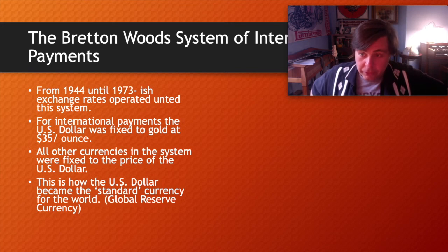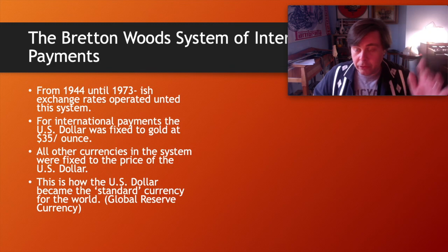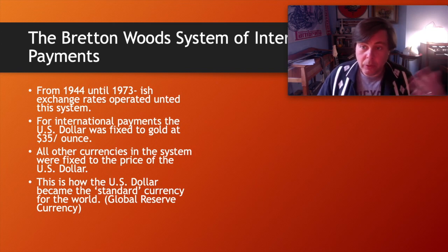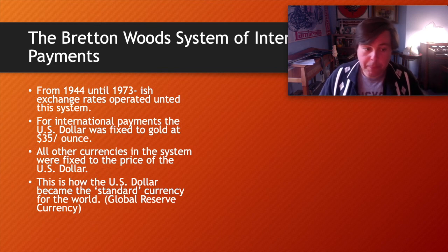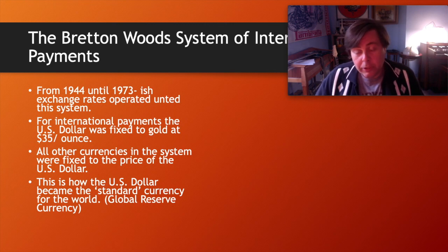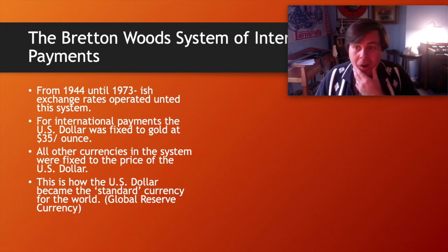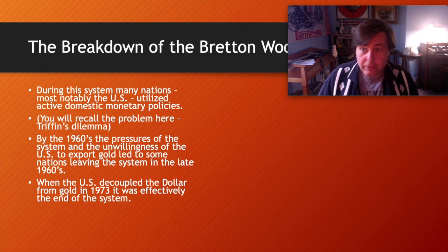International payments were made in US dollars, and internationally — though not domestically — governments could convert those dollars into gold. So if France was owed US dollars for international payments, it could request payment in gold instead. It was essentially a US-dollar-based system anchored by gold. True gold standards had really been done away with by the 1930s — about 100 years ago now.